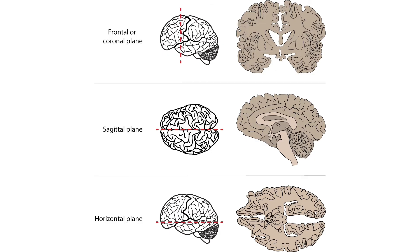There are planes or axes that can be used to examine the nervous system. The frontal or coronal plane is a vertical plane in a medial to lateral direction. It runs parallel to the eyes or ears, dividing objects into front and back pieces.